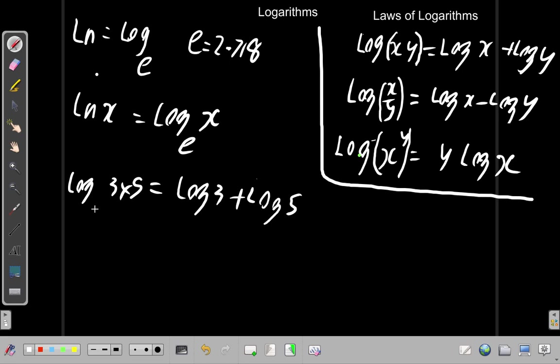Now the base of the log is e, but it's not commonly written this way when you're talking about logarithm with a base of e. It's written as ln. So ln(3×5) should be equal to ln 3 plus ln 5.